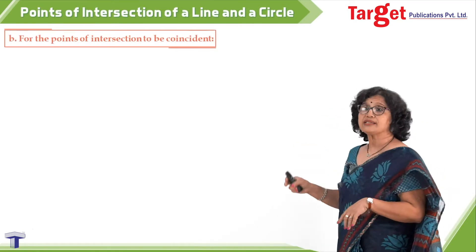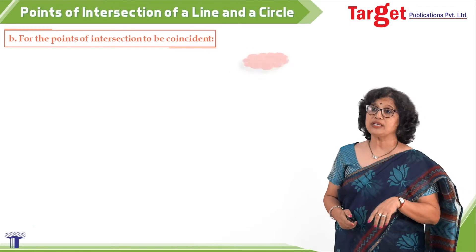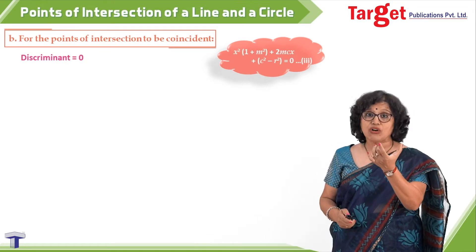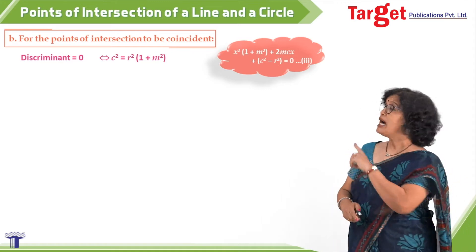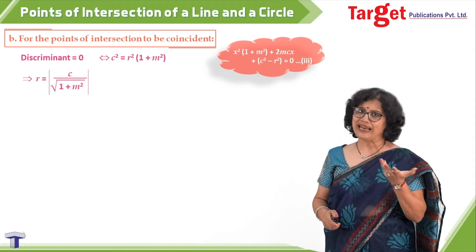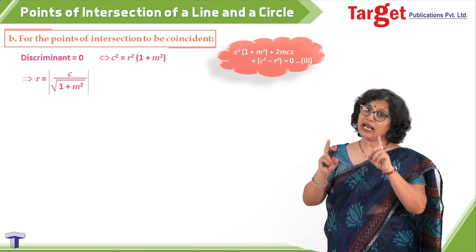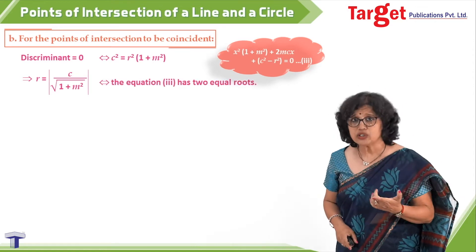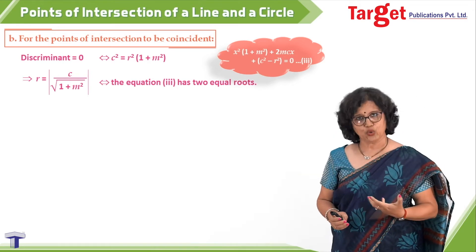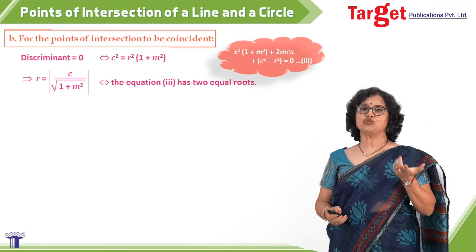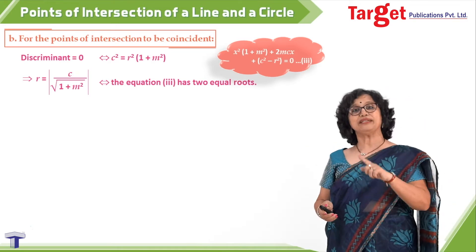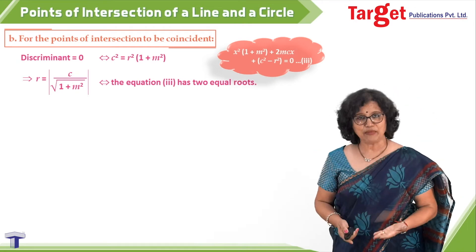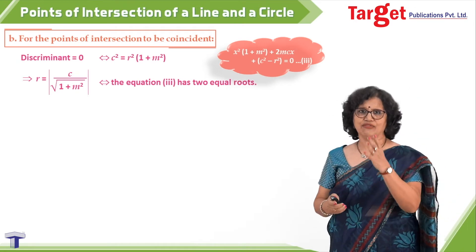The next case is where the points of intersection are coincident ones. For coincident points, the discriminant must equal zero. Simplifying gives c squared equal to r squared times one plus m squared, and from that r equals the absolute value of c upon the square root of one plus m squared. This condition is equivalent to the equation having two equal roots, the line meeting the circle at exactly one point, or the line being a tangent to the circle.